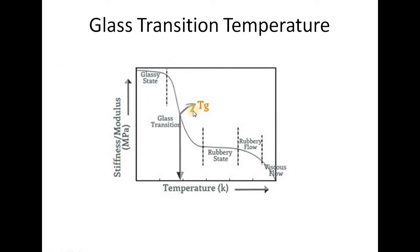As we see in the figure, at glass transition temperature the polymer is undergoing transition from the glassy state to the rubbery state. Further, there is rubbery flow and viscous flow in the polymer at high temperatures.